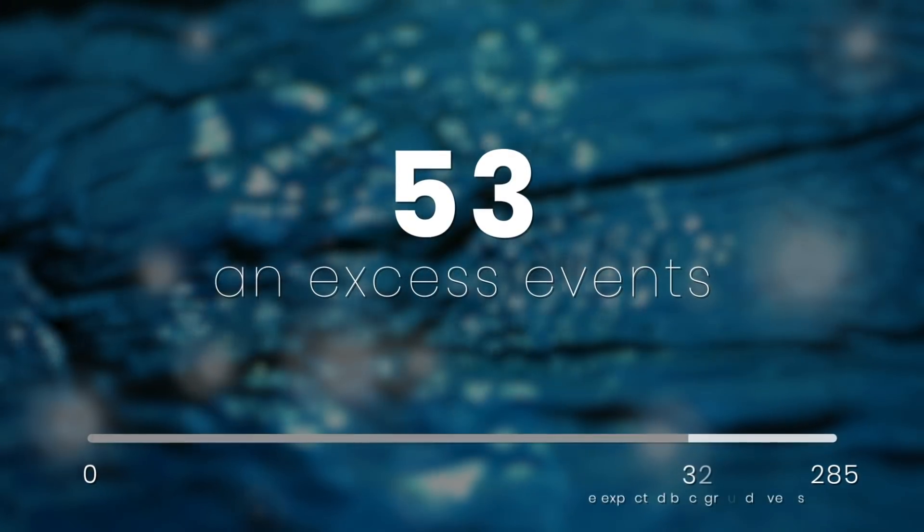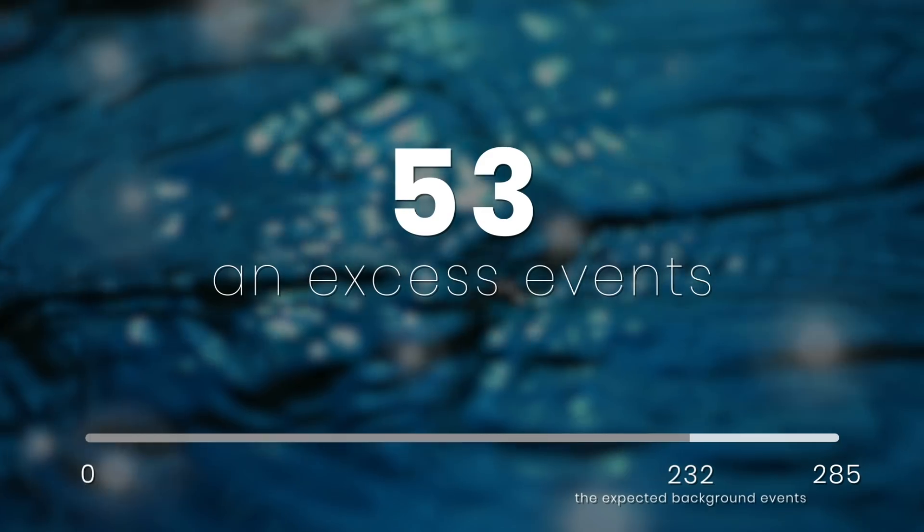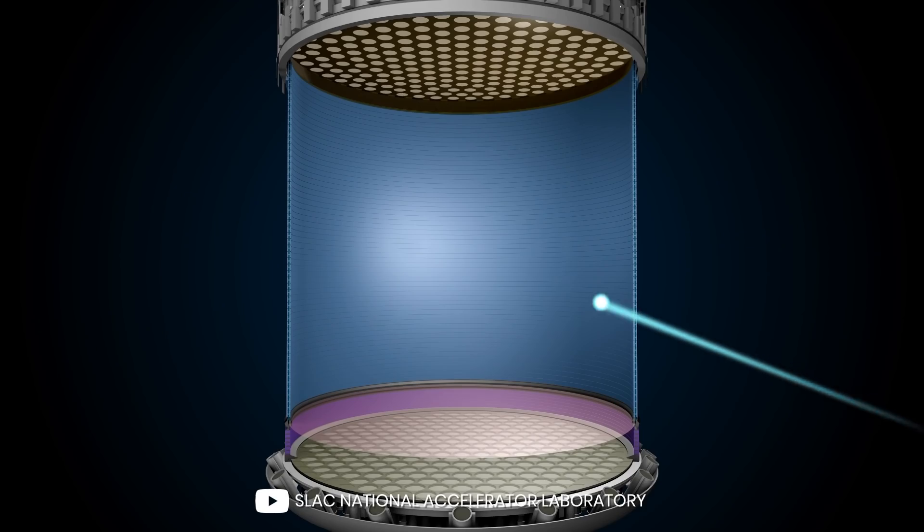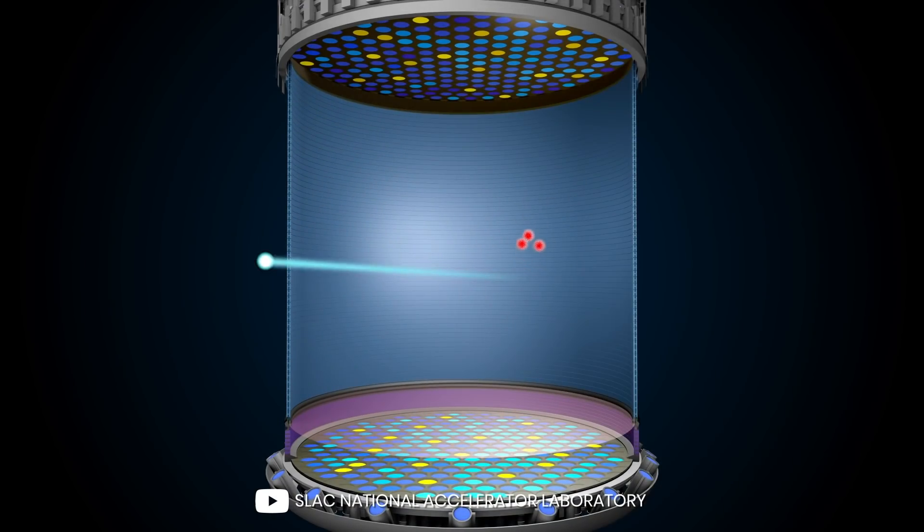When they checked, they were surprised to find an excess of events, 53 to be precise, over the expected background of 232 events. Something strange seemed to be happening, but was it dark matter?